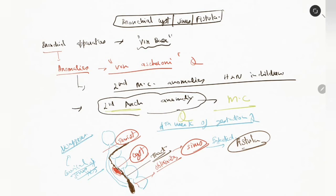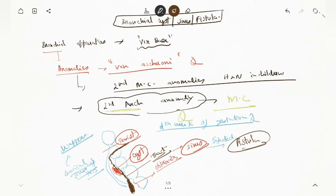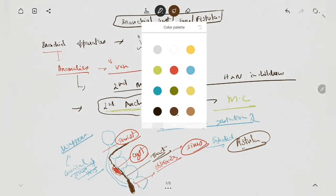In summary: the branchial apparatus was first described by von Baer, and anomalies were discovered by Ascherson. Branchial anomalies are the second most common anomalies seen in children, and the second arch anomaly is the most common. At about the fourth week of gestation, the branchial arches develop. The second and sixth arch ridges fuse — if this persists, it may lead to formation of a cyst, sinus, or fistula.